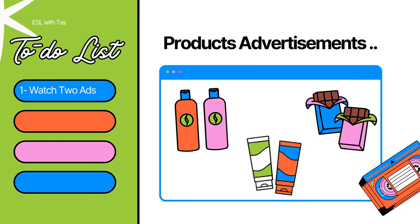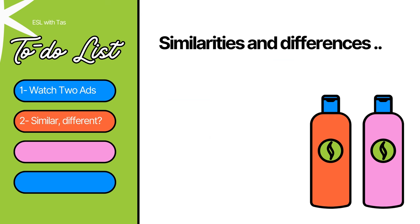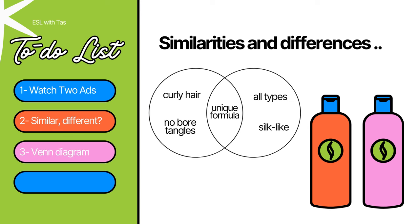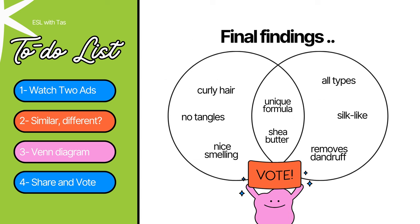The third activity is compare and contrast two advertisements. One: have students listen to the ads of two similar products — I usually go with shampoo, toothpaste, or chocolate. Two: they have to note the similarities and differences between them. I like to ask them to draw a Venn diagram so they can organize their notes.